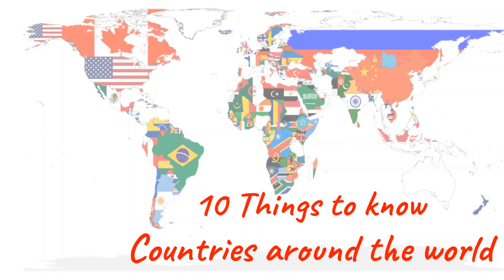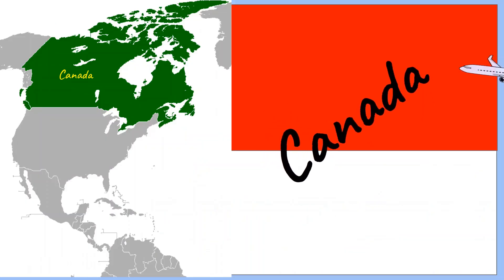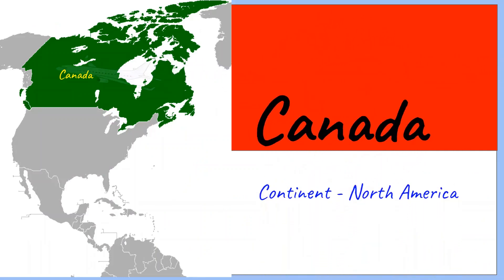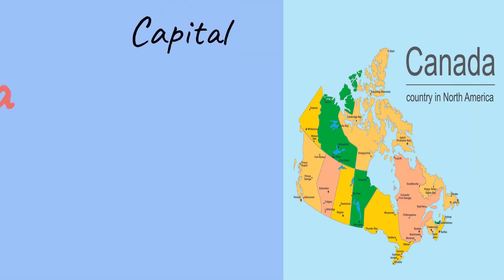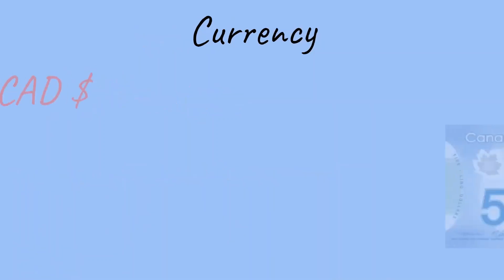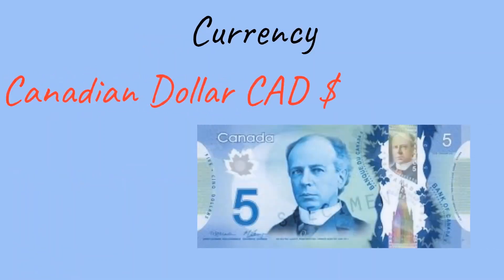10 things to know — countries around the world. Today we're going to be learning about Canada. Canada is in North America. The capital of Canada is Ottawa. The languages people speak in Canada are French and English. The currency of Canada is Canadian dollars.